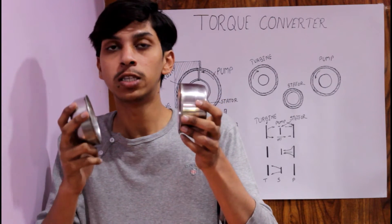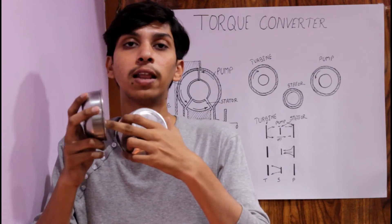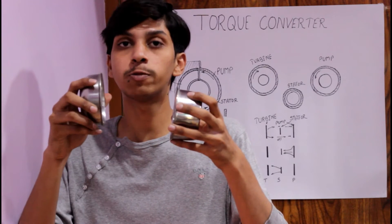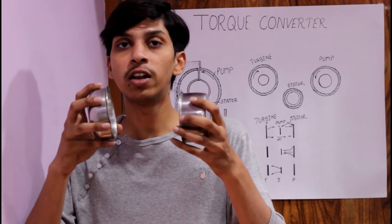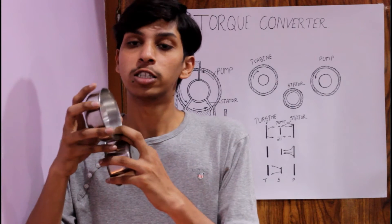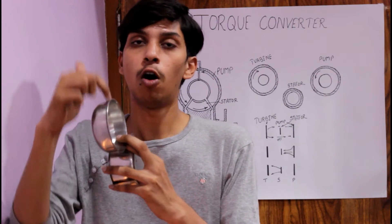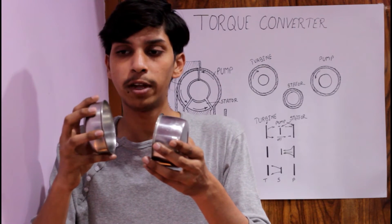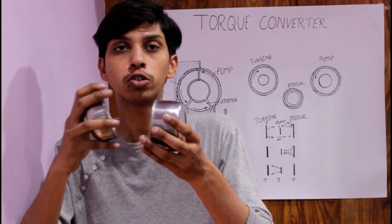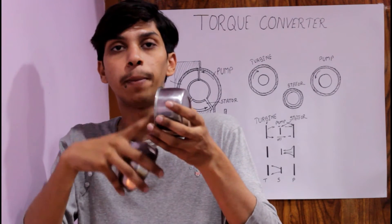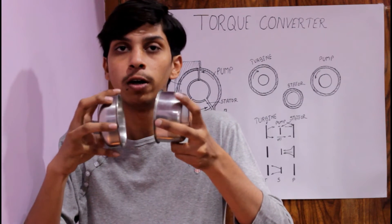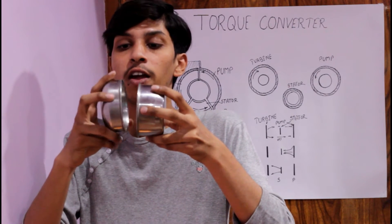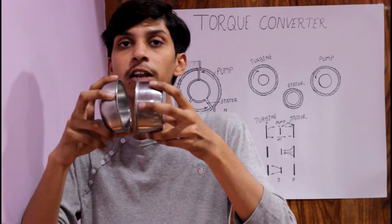The pump is also like a turbine, which has radial blades on it, same as an impeller. So when the impeller — the turbine — starts spinning because of the engine, due to the centrifugal effect the oil spreads out toward the edge of the turbine. After this, the oil from the turbine goes to the pump and strikes the blades of the pump.